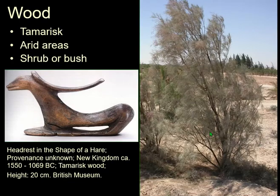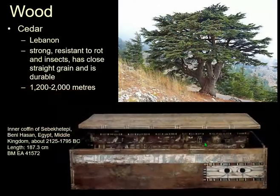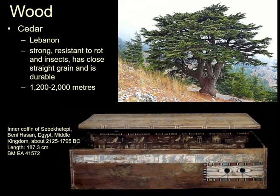Tamarisk is quite nice — again a shrub or bush found widespread in the Middle East, particularly in arid areas, of which we have a lot. This is one I photographed myself at Tadmor, Palmyra, whereas this is a rather nice headrest made out of tamarisk. And of course you have the woods which are not from Egypt that you have to go somewhere else to get, and the most famous of these is cedar — which probably should have a red arrow because you should remember cedars; it's on the Lebanese flag and everything.